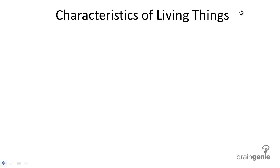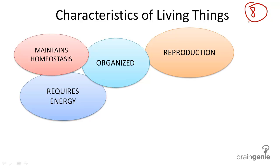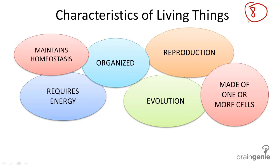What makes something alive or considered by scientists to be a living thing? We know that air, steel, rock, and water are not alive, but why? There are eight characteristics of living things that we can define briefly. An organism is anything that has or once had all of these characteristics.